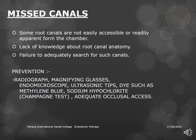Missed canals occur when some canals are not easily accessible or readily apparent from the pulp chamber. The main reason is lack of knowledge about root canal anatomy. Each tooth can have different canal configurations — for example, the mandibular central incisor, which is usually thought to have one canal, may have two: buccal and lingual.